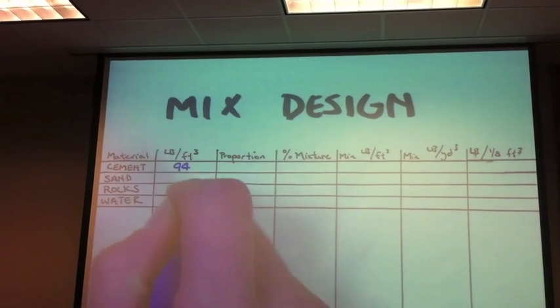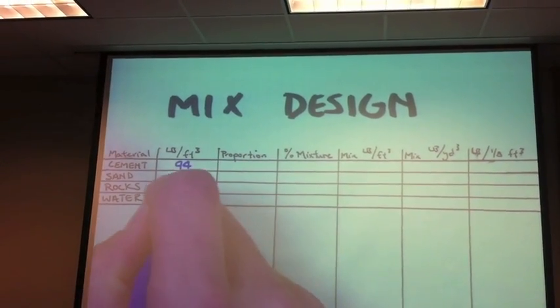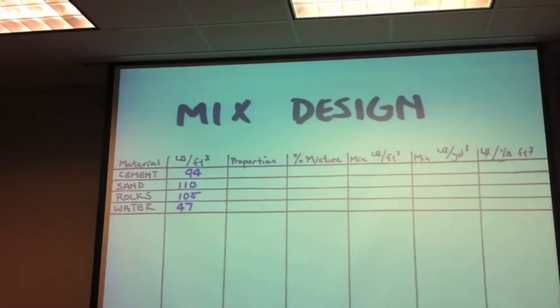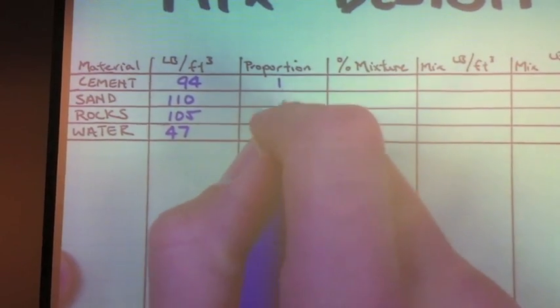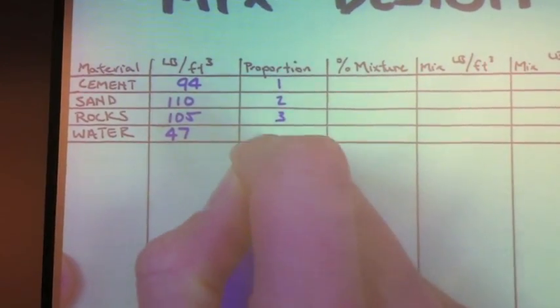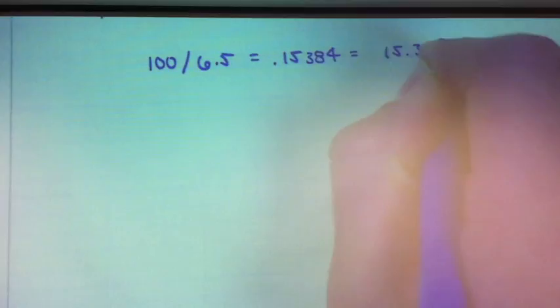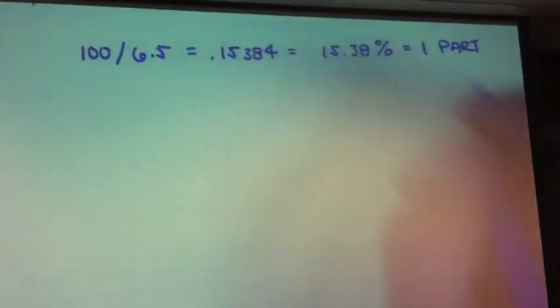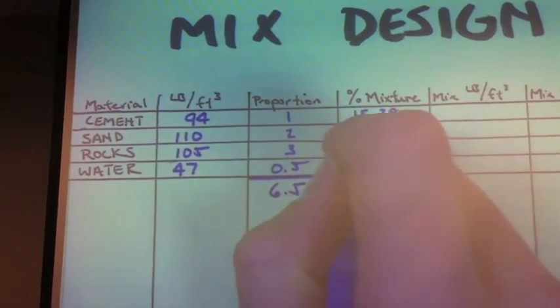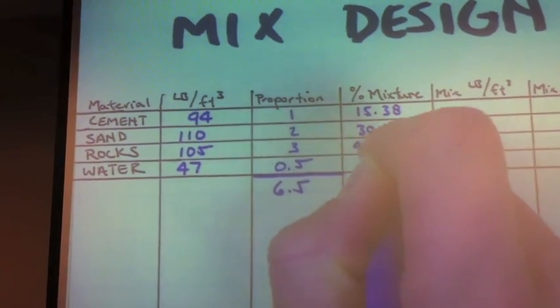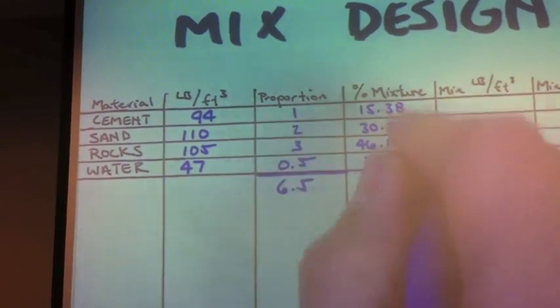To design our mix, we started with the weight per cubic foot of our main ingredients. We used proportions of one part cement, two parts sand, three parts rocks, and half a part water. We divided 100% by 6.5 parts to find that each single part was 15.38% of the entire mix. We multiplied that percentage times each ingredient's parts to find the percentage of the mixture that each ingredient was.